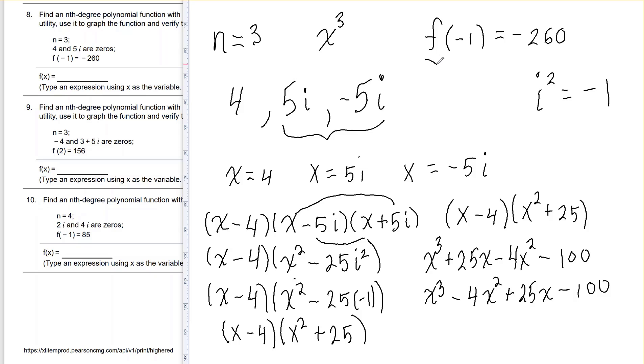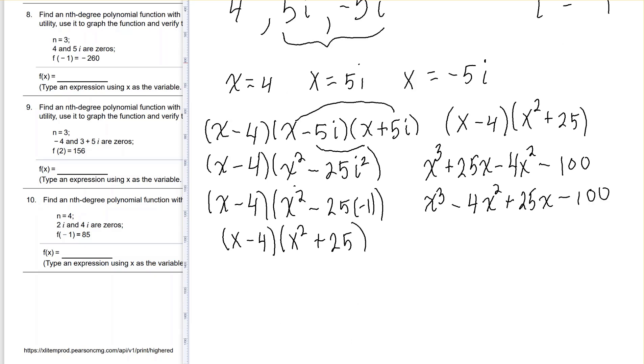Now they told me f of negative 1 needs to come out to negative 260. Otherwise, I'm going to have to adjust by multiplying through by something. So let's put in negative 1.